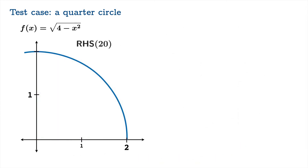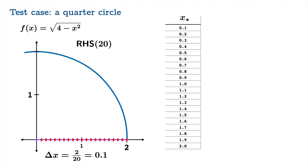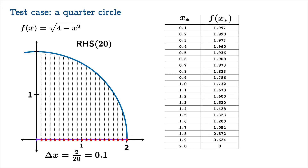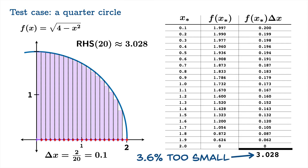Let's try a right-hand sum, and we'll increase the number of divisions — a right-hand sum with 20 divisions. The common width of each interval is now 0.1, half as wide as before. Using right-hand endpoints, which start at 0.1 and end at 2, we find all our function values, take the products, add them all up, and we get 3.028. Notice this time we're about 3.6% too small.